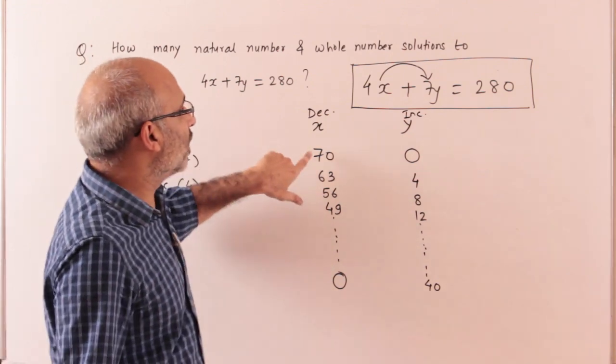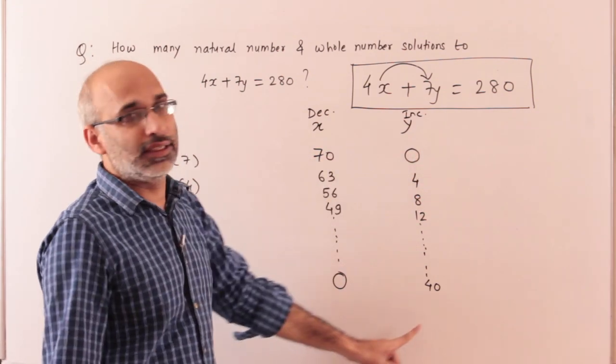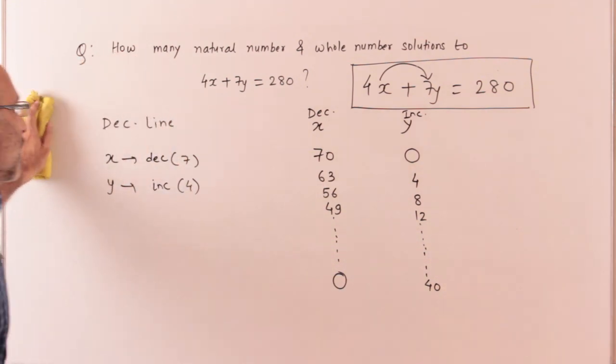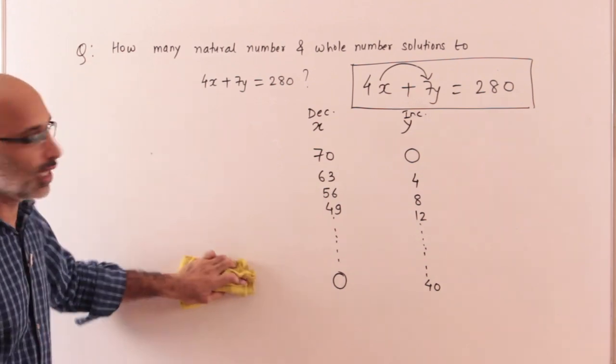So the first solution was 70, 0. Now the last solution is 0, 40. Now we have to count the answers. We have to learn how to count.